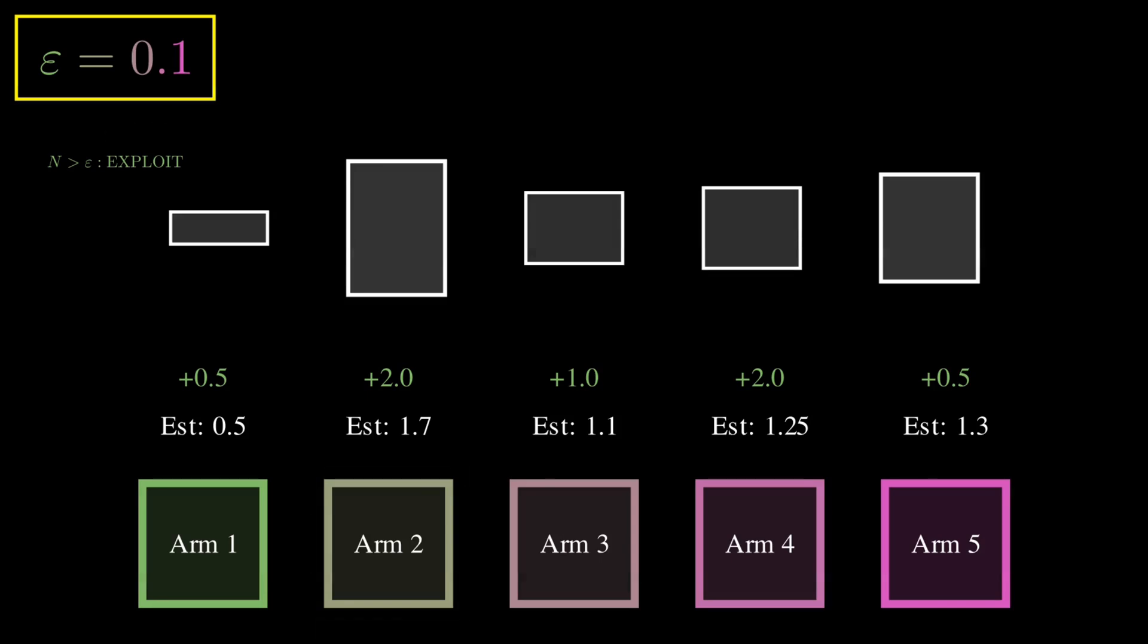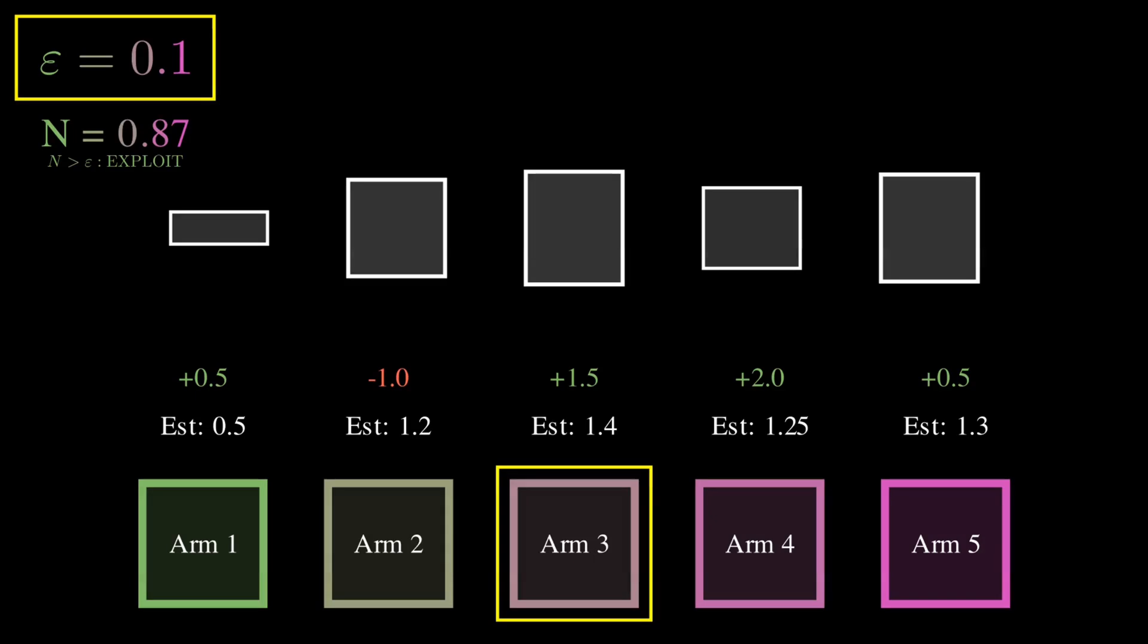And this balance ensures that while we stick mostly with our winning stocks, we still give every option a fair shot to prove its worth. So what you're seeing in this animation is exactly just that. We are generating a random number, N, between 0 and 1. If that number is higher than 0.1, we choose the stock with the highest estimate reward. Otherwise, we just choose a completely random stock, and sometimes that stock will be the stock with the highest reward. That can happen because it's completely random, but most of the time, we will be exploring the other arms.